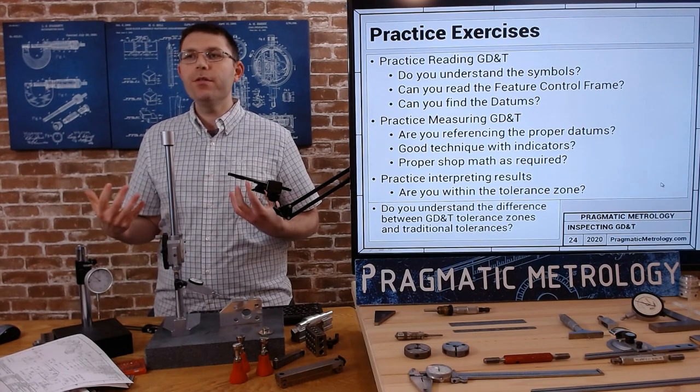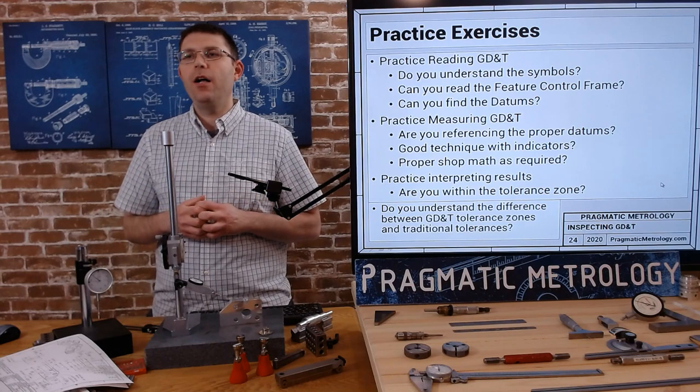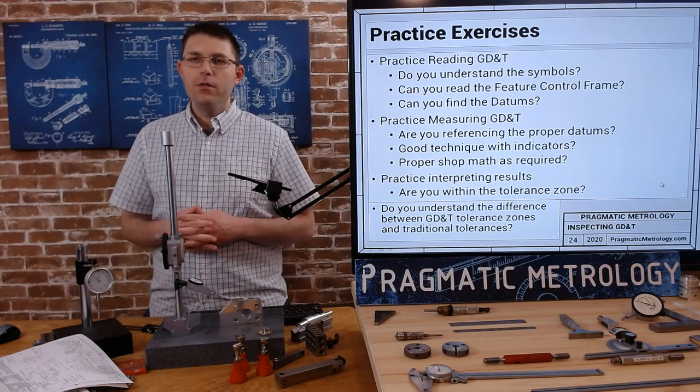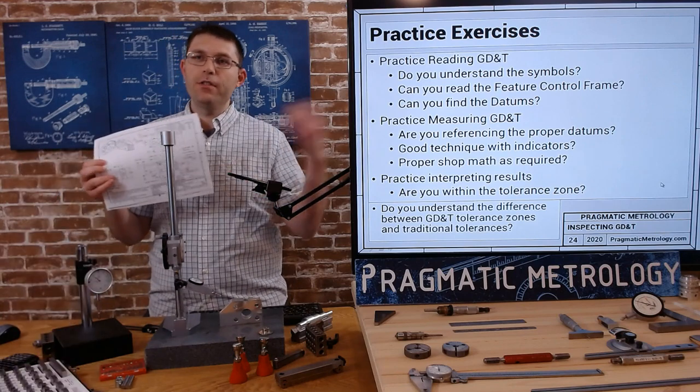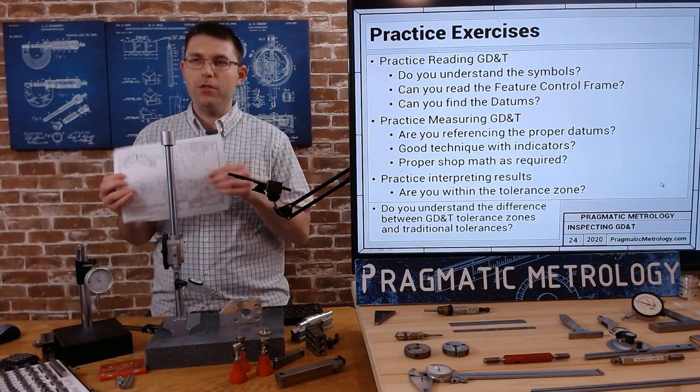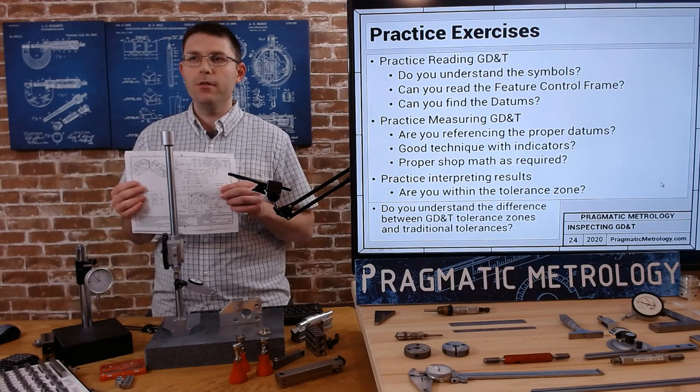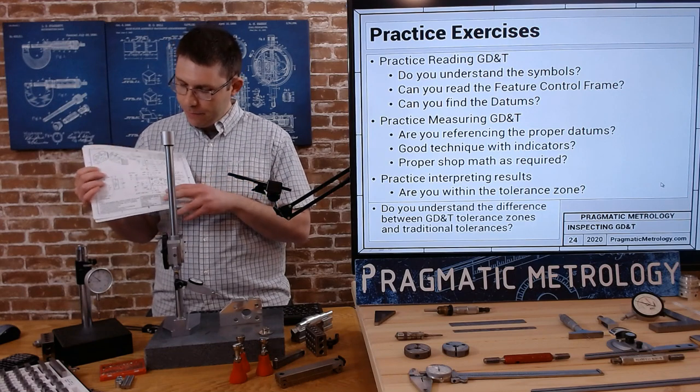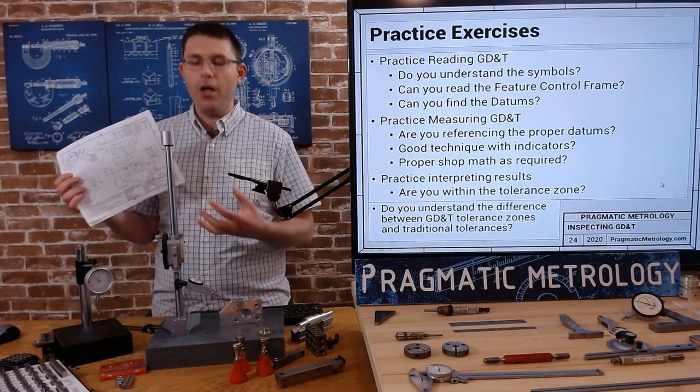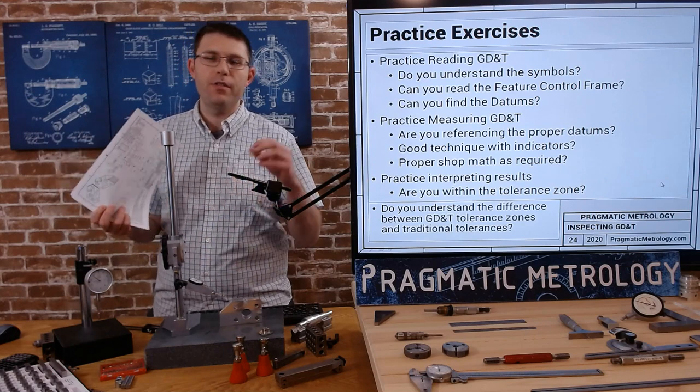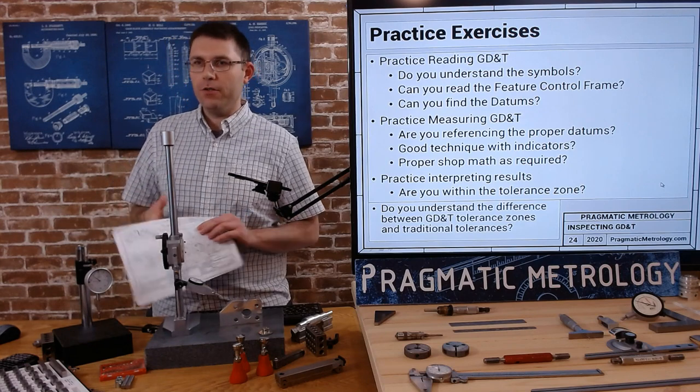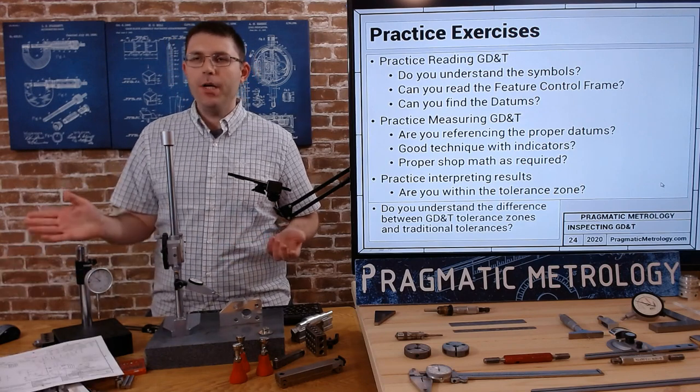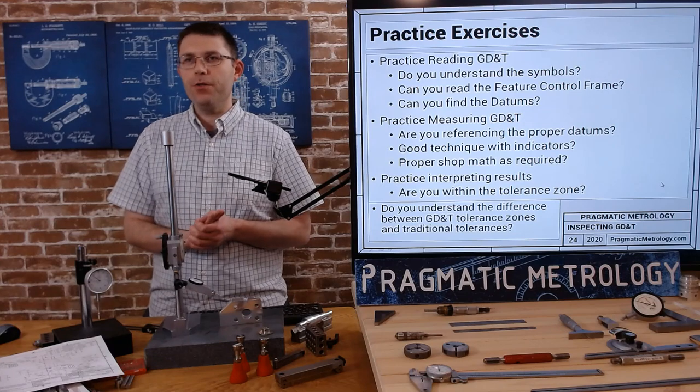Do you understand the difference between GD&T tolerance zones and traditional tolerance zones? When GD&T is involved, you can take those traditional tolerances, throw them out the window, and just use the feature control frame tolerances. But you still use the nominal locations to help you choose your gauges, choose the size of the micrometers you're going to be using, set up your sine bars as you saw. But all the tolerances come from the feature control frame.